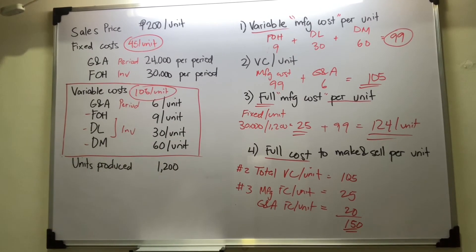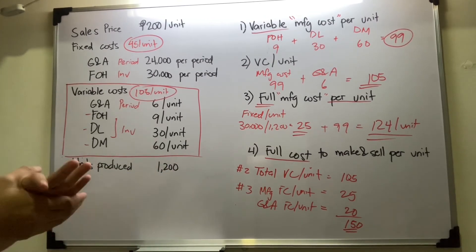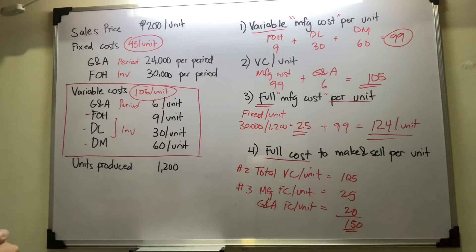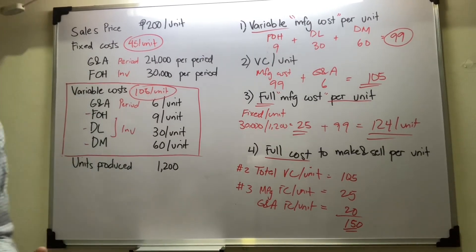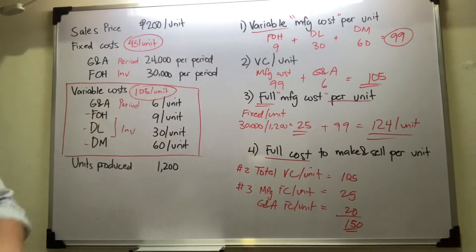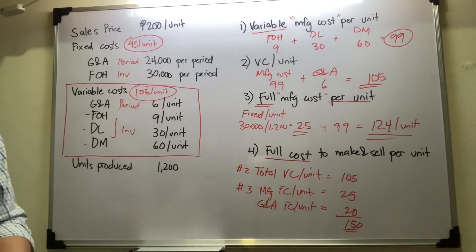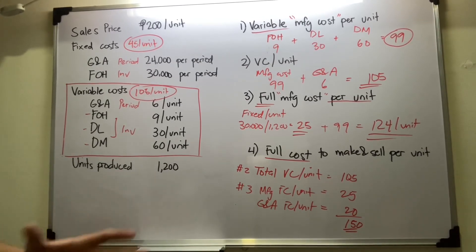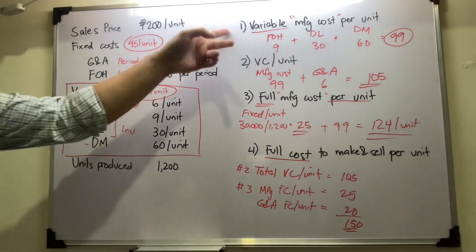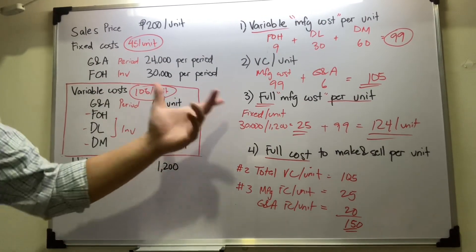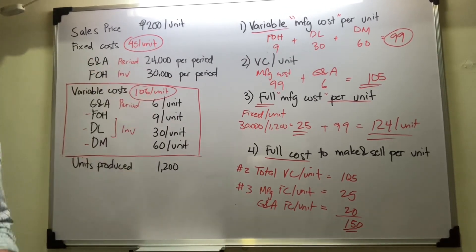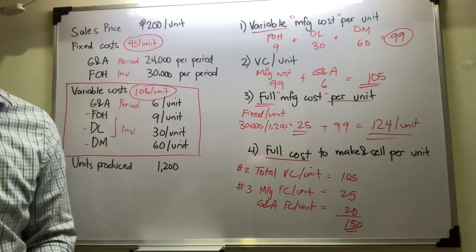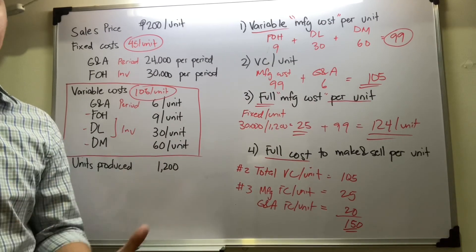Key reminders: when asked for variable cost per unit, include both inventoryable (product) costs and period costs. But when asked for variable manufacturing cost per unit, include only the variable product or inventoryable costs. For full manufacturing cost, include all manufacturing costs — both fixed and variable — and convert fixed costs to a per unit basis if needed.